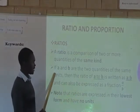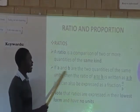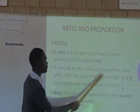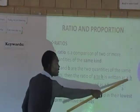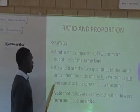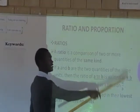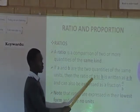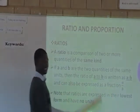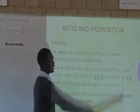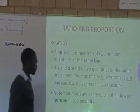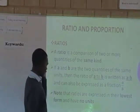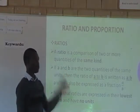So, if A and B are quantities of the same units, then the ratio of A to B is expressed using a colon. This can also be expressed as a fraction. If we are expressing a ratio as a fraction, take the first quantity as the numerator and the second quantity as the denominator. Note that ratios are expressed in their simplest form.